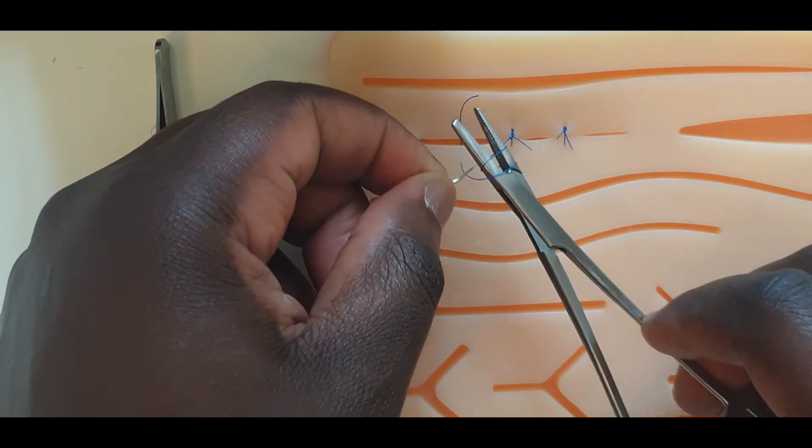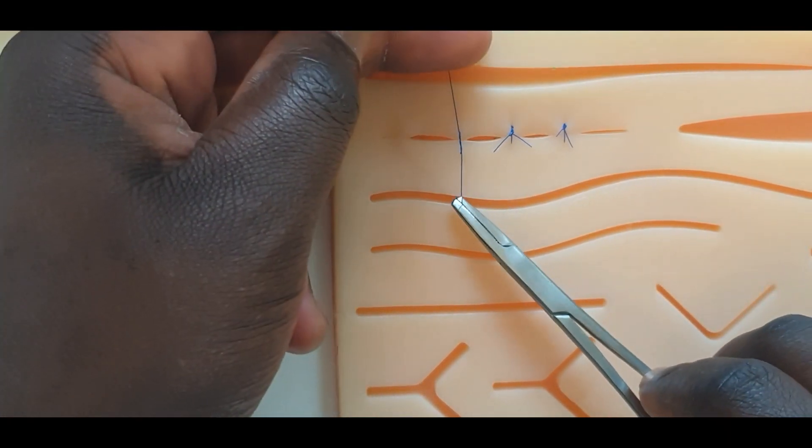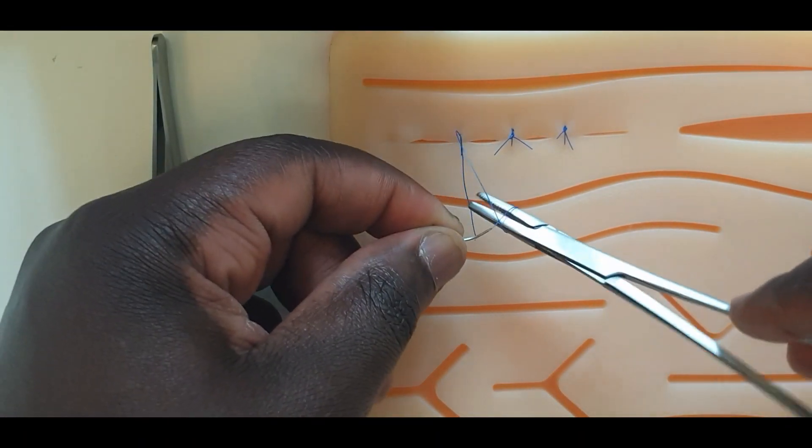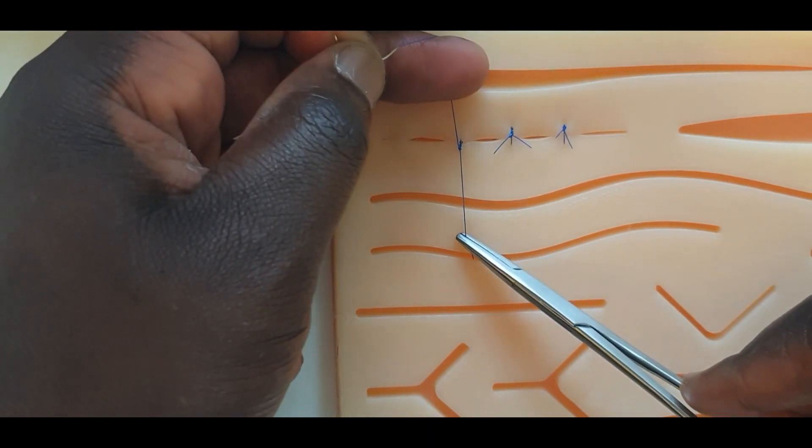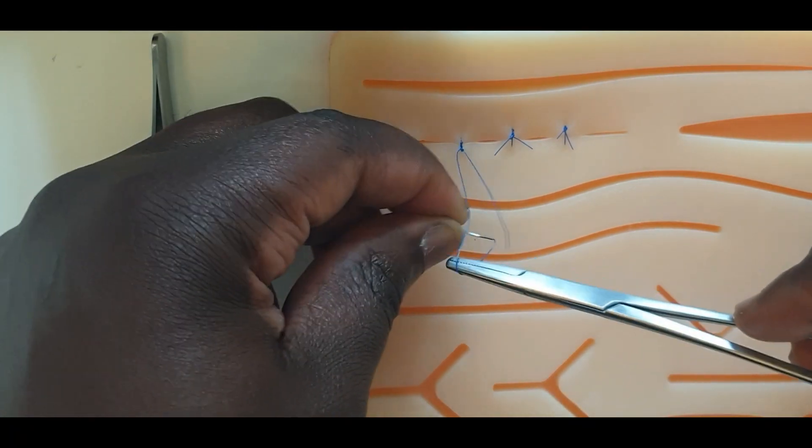A surgeon's knot is made. A reef knot is to follow, however, when tightening this knot, you do not alternate the direction of the threads.